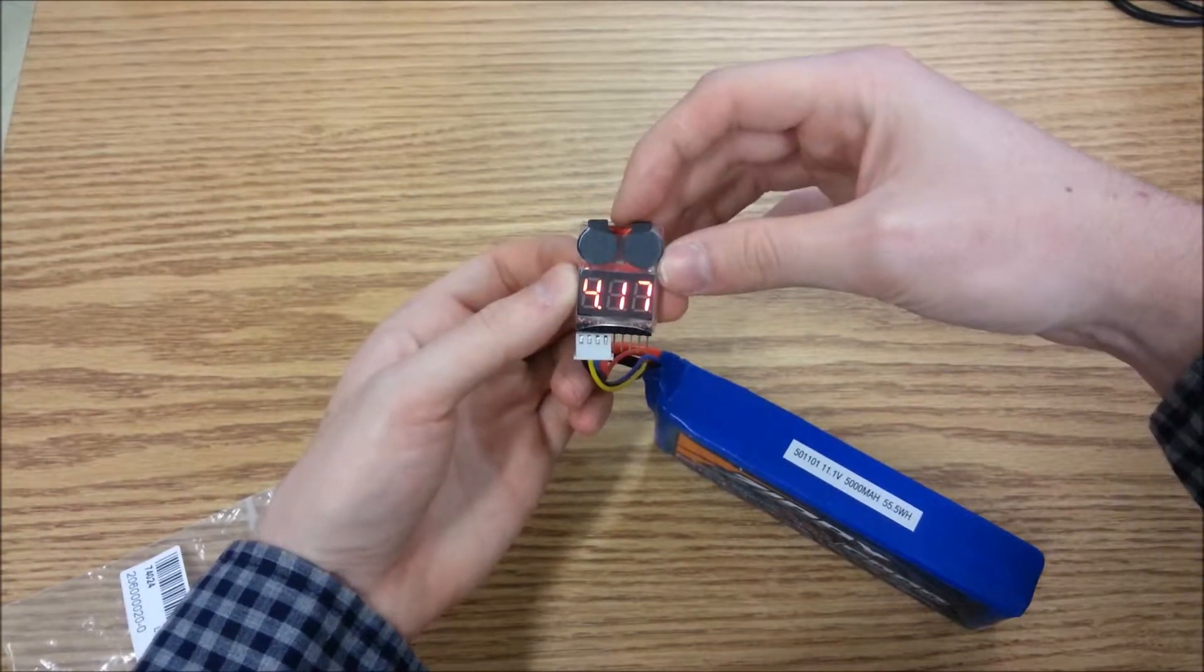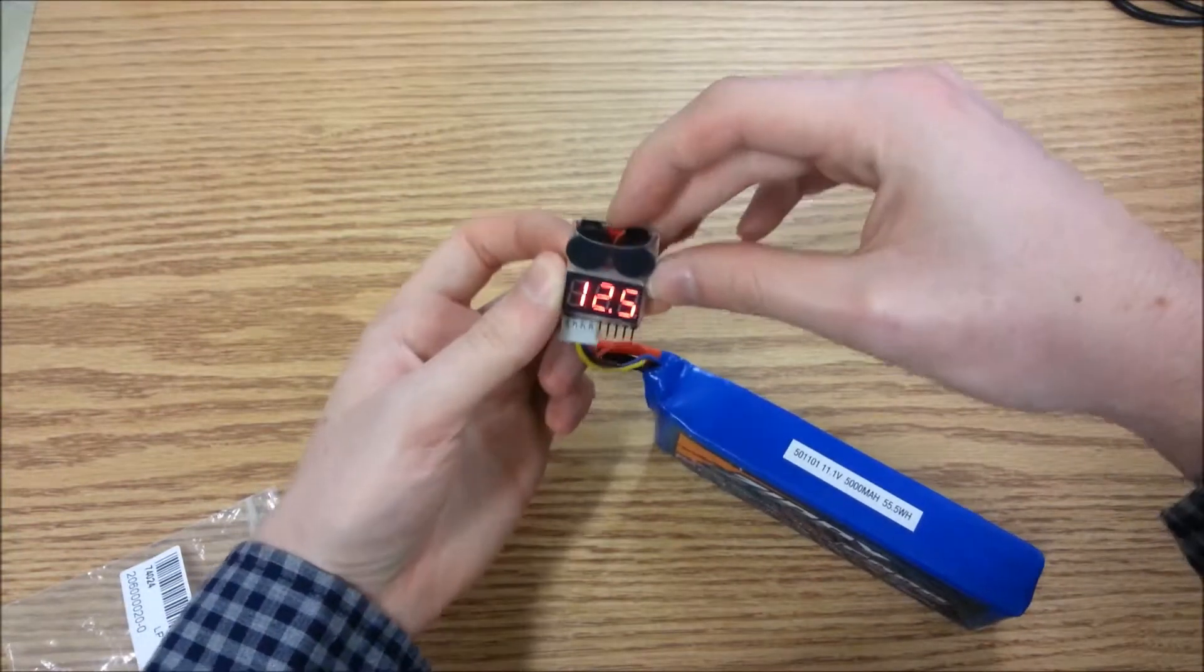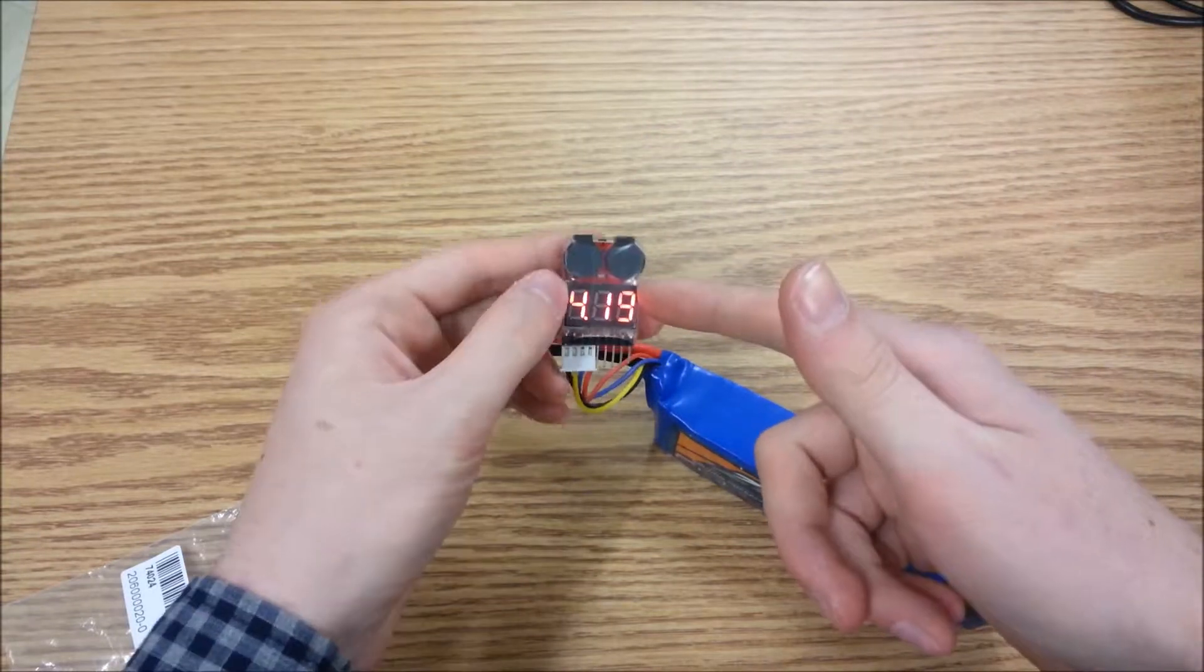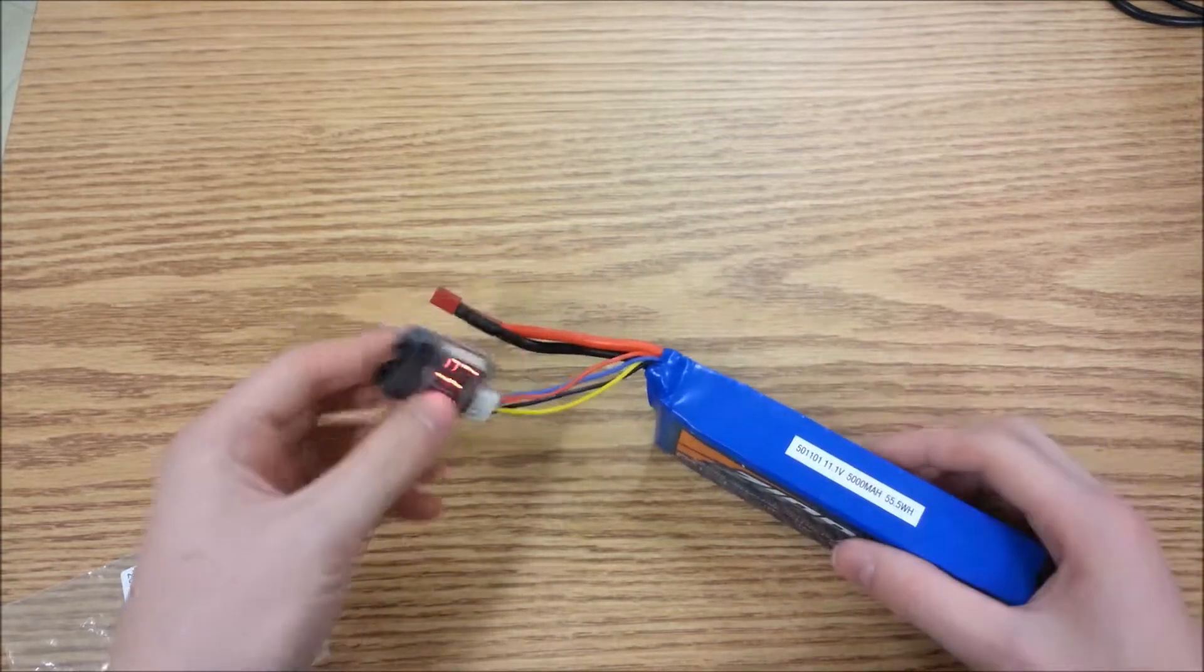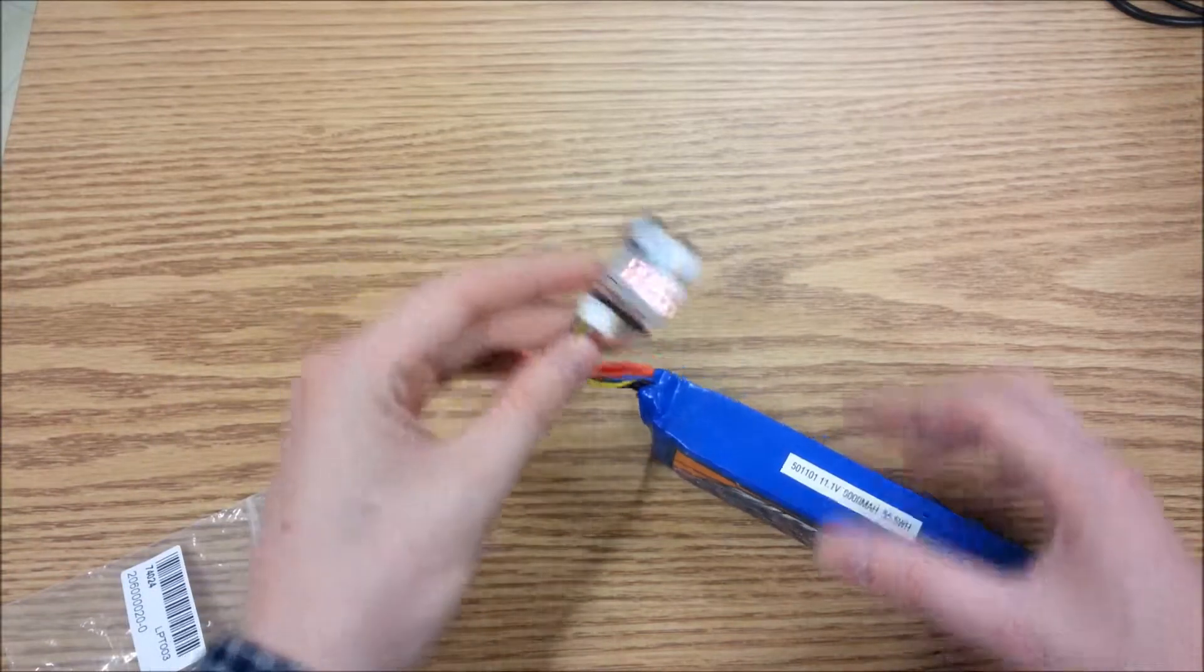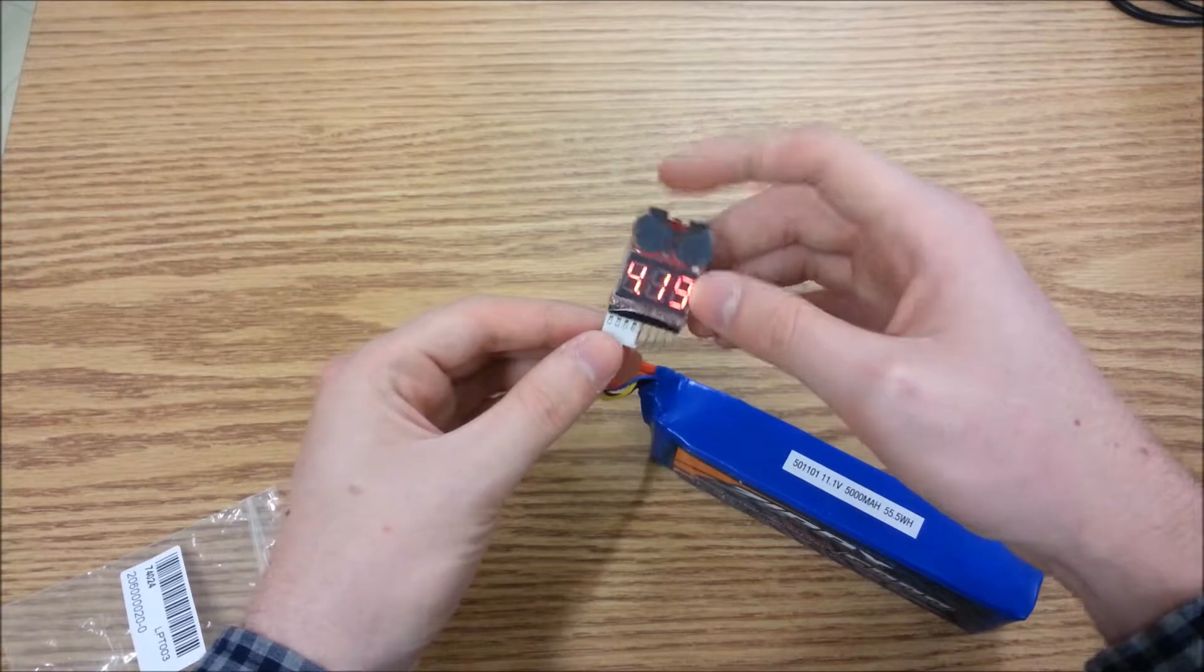Then by pressing the button at the top here, that's really small, you can set your voltage threshold, which mine is currently at 3.7 volts, and then it'll set off the alarm once your cell goes below 3.7 volts.